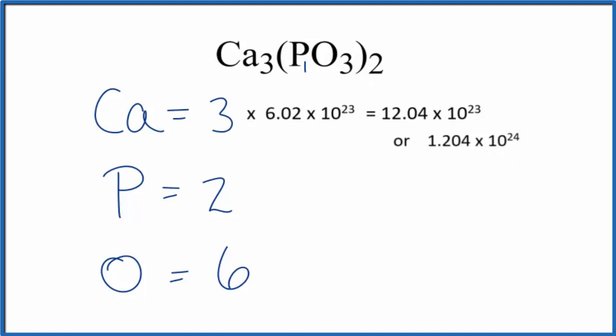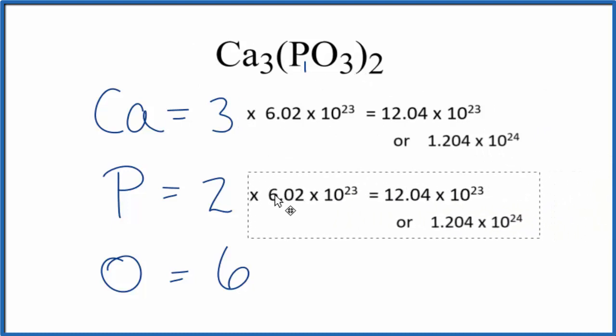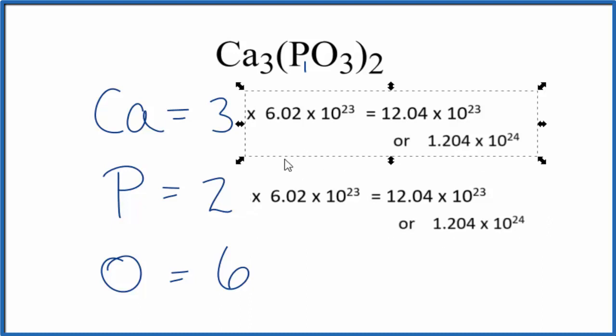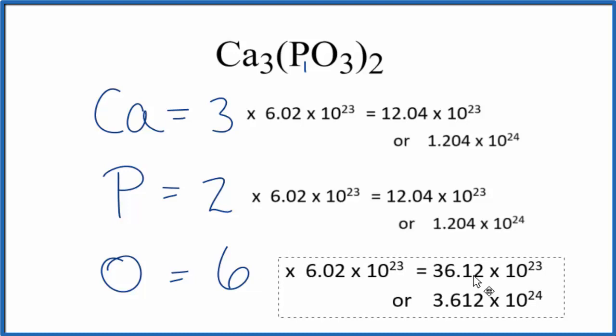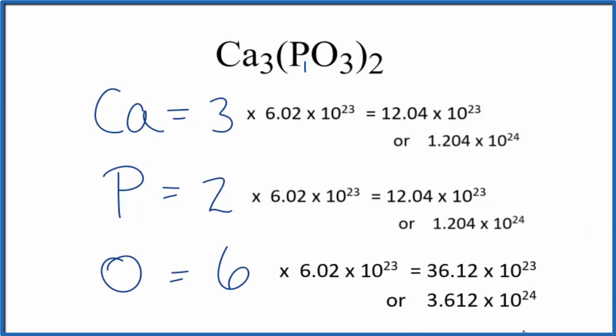For the phosphorus, you'd multiply the two phosphorus atoms by Avogadro's number. And then for oxygen, you'd multiply those six oxygen atoms by Avogadro's number again, and that would give you the number of oxygen atoms in calcium phosphite.